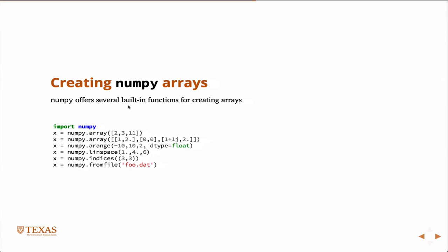So NumPy offers several built-in functions for creating arrays. So you can use the NumPy array command, where you can just say stick in three integers. And again, because they look like integers, this will be interpreted as an integer array. Likewise, here I have basically complex numbers. The J indicates a complex number. So this is going to be interpreted as a complex array and stored as such.